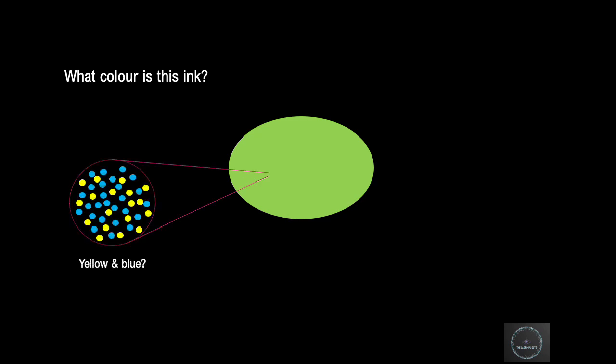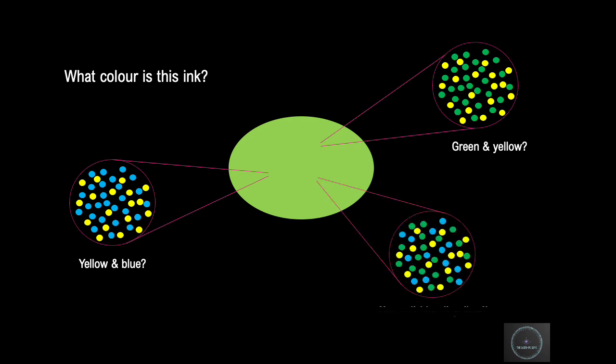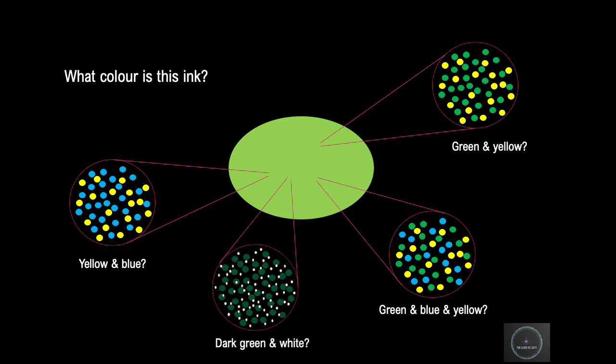This green colour may well be a mixture of yellow and blue inks. It may well be a mixture of green and yellow inks, or it could be a combination of all three: green, yellow and blue. Or it might even be a darker green ink with some lightening agent like titanium dioxide to make it brighter.